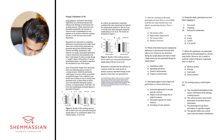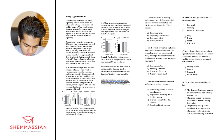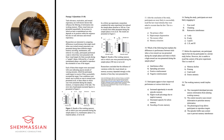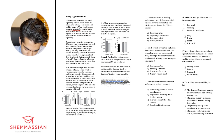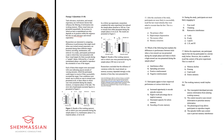Task relevance, motivation, and reward expectancy are well-known factors that influence the filtering of information into working memory. When visual items are presented sequentially, the accuracy to which an item is remembered not only depends on its position within the sequence, but also on task relevance and reward expectancy.